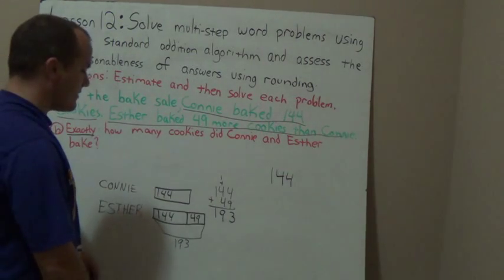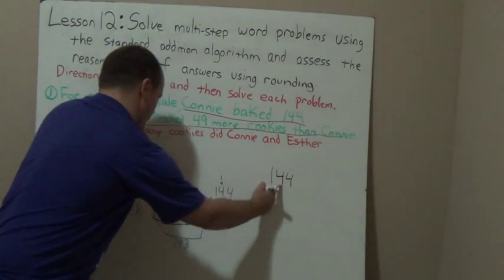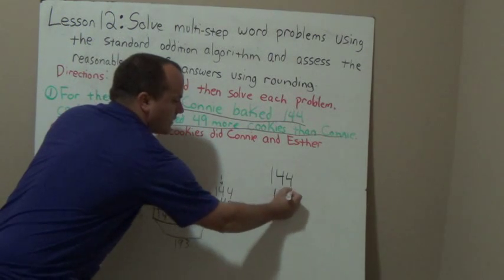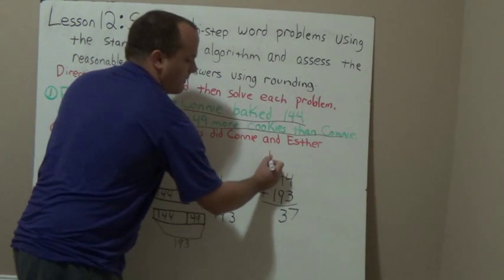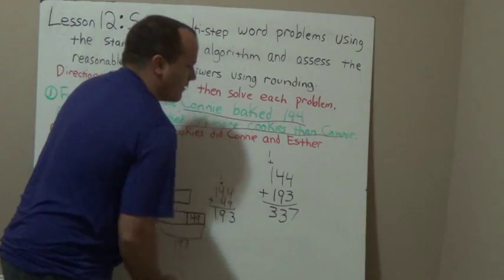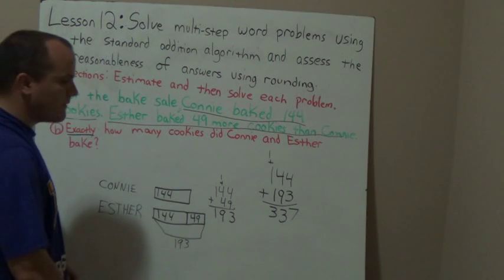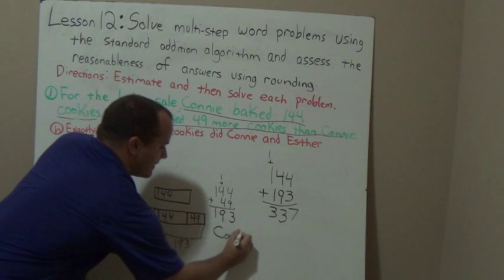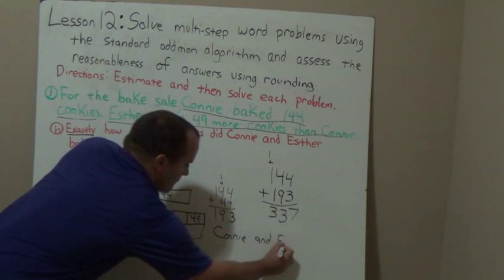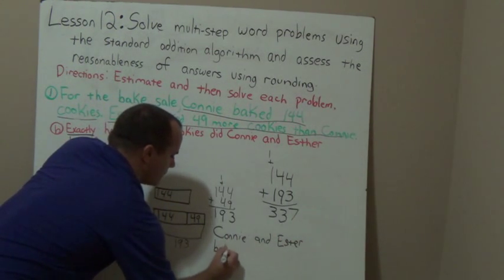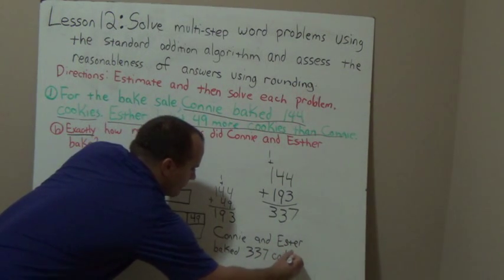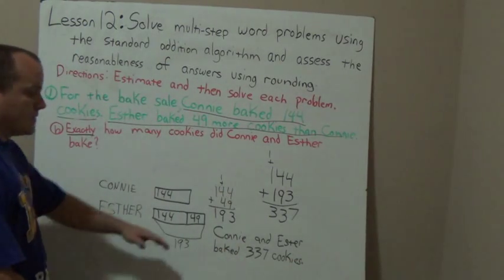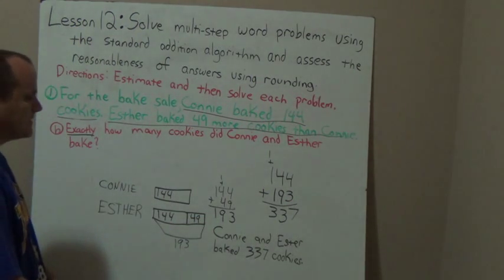So if I want to know exactly how many they both baked together, that means I'm combining them — adding 144 for Connie's cookies plus 193 for Esther's. Make sure I put my operation. 4 plus 3 is 7. 4 plus 9 is 13, carry my 1 up top. 1 plus 1 is 2, and 2 plus 1 is 3. So exactly how many cookies did Connie and Esther bake? 337. Let me write that in a sentence: Connie and Esther baked 337 cookies. Make sure you have your answer as a sentence — check your partners. That's letter B.